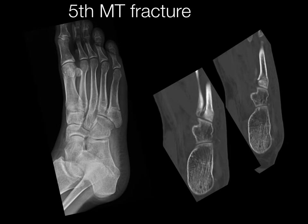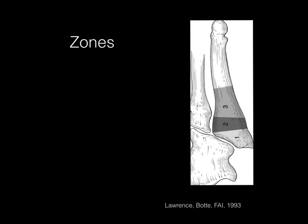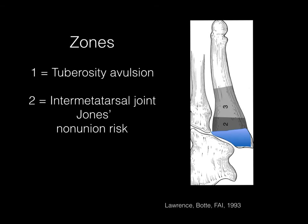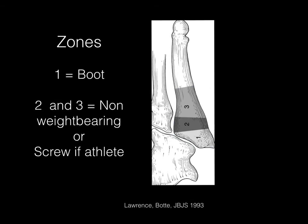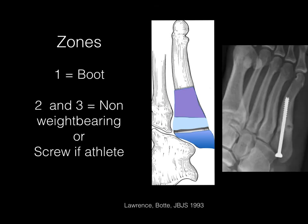The fifth metatarsal fracture is easy to see but the terminology can be confusing. Thinking of the base of the fifth metatarsal in three zones is helpful. Zone one is the tuberosity avulsion. Zone two is the intermetatarsal joint — this is where the true Jones fracture occurs and is a non-union risk region. Zone three is the shaft stress fracture, also at risk for non-union. Treatment: zone one is treated with a boot, while zones two and three are often non-weight-bearing, or fixed with screw fixation for athletes wanting to return to play.